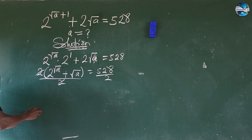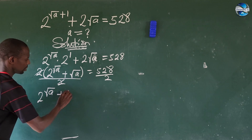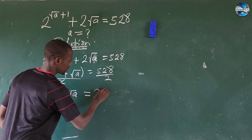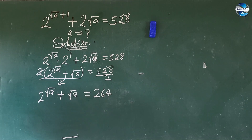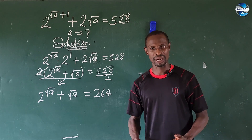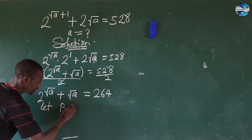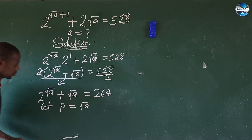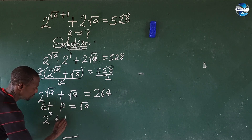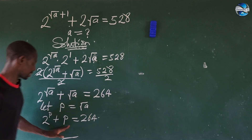After dividing, we are left with 2 to the power of root a, plus root a, equal to 264. Now we have a radical, so we make a substitution: let p equal root a. We can then rewrite the expression as 2 to the power of p, plus p, equal to 264.